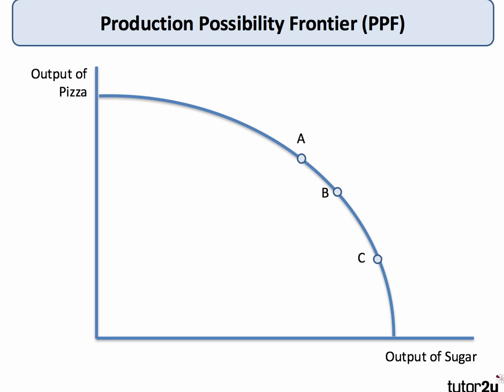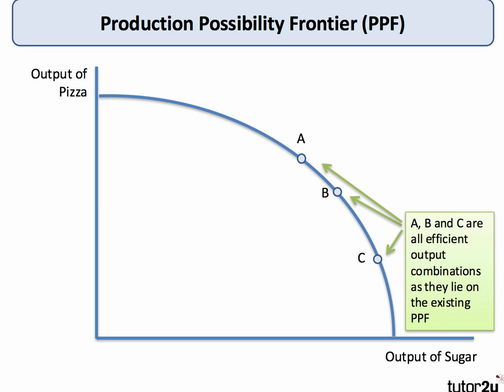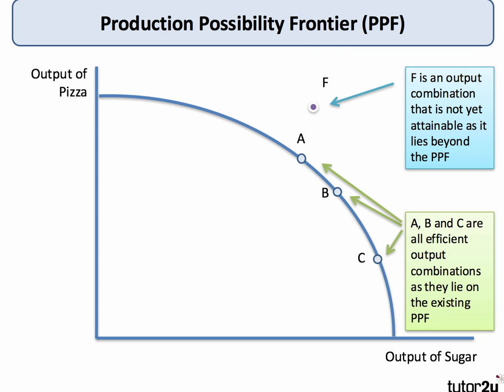In this example, a business could be supplying pizza or producing sugar. A, B and C are combinations that lie on the production possibility frontier — those are efficient output combinations because they lie on the existing PPF. All available land, labour and capital resources are being utilised efficiently. In contrast, a combination shown by point F is not yet attainable — it lies beyond the PPF.